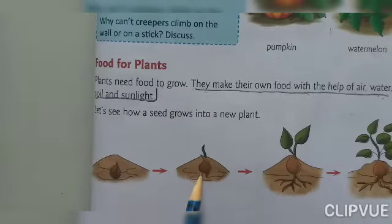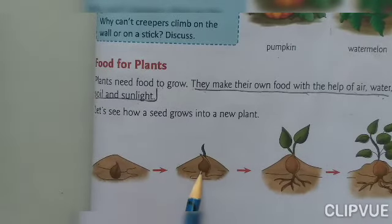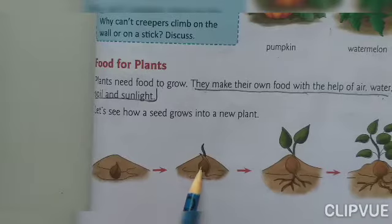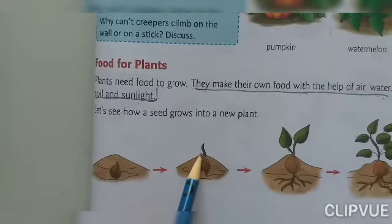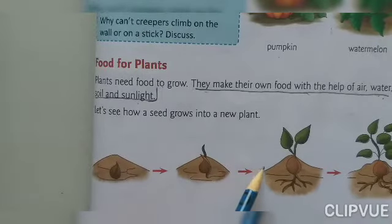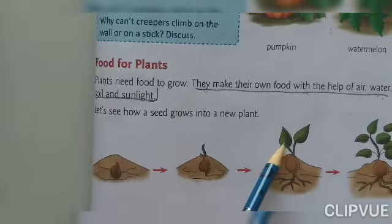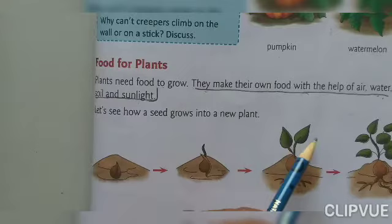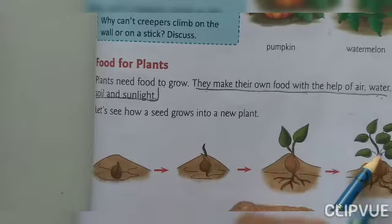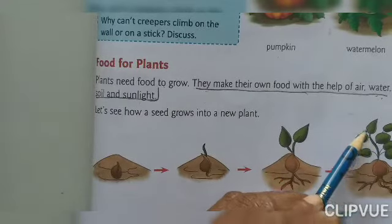After that, if the seed gets water, soil, air, and sunlight, then it will grow. After that, it will come out with leaves and the stem. So this is how plants grow — from a seed.